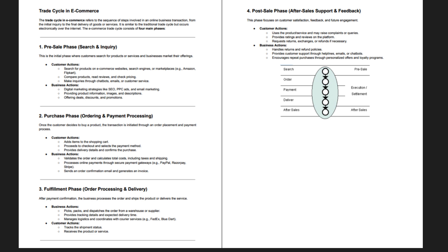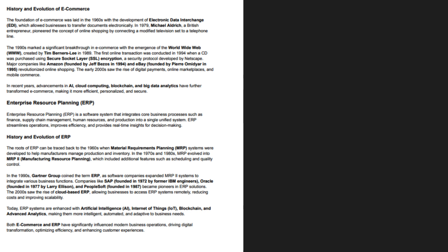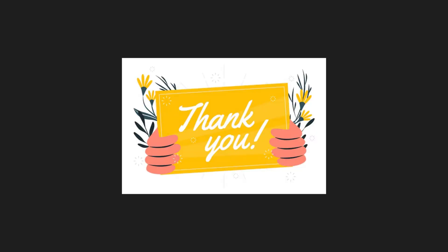Some important exam notes from this chapter include the history of e-commerce and the trade cycle, both very important from an exam point of view. The trade cycle refers to the complete journey of an order — from when you place an order on sites like Amazon or Flipkart, all the way until the delivery reaches your house from a retail or manufacturing store. This complete internal process is called the trade cycle.